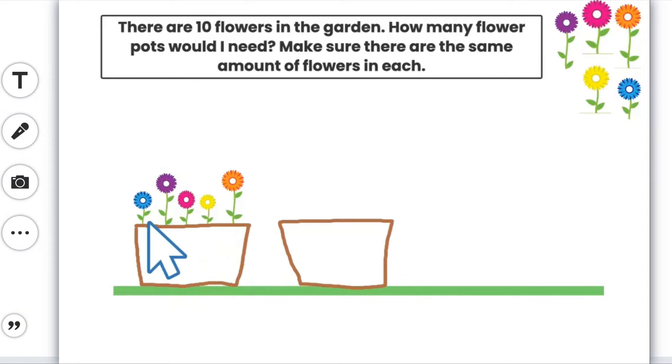1, 2, 3, 4, 5 and I've got 1, 2, 3, 4, 5 left over. So I know if I put these flowers in this pot, both of my groups would have 5. That means that there are still 10 flowers. I have 2 pots and there's the same amount in each. I'm going to go ahead and do that.